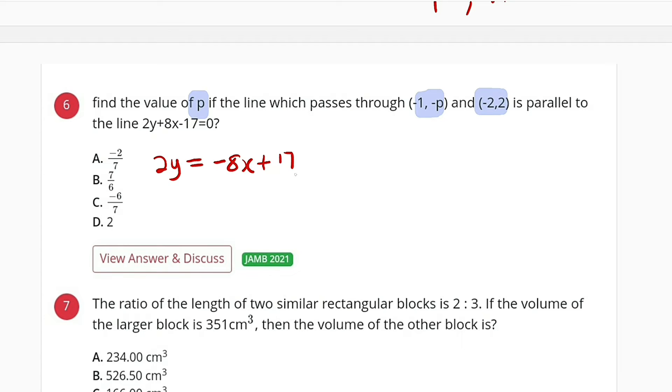We divide both sides by 2. We have y equal to negative 8 divided by 2, which is negative 4x plus 17 divided by 2. And you can see m, which is the slope, is equal to negative 4.